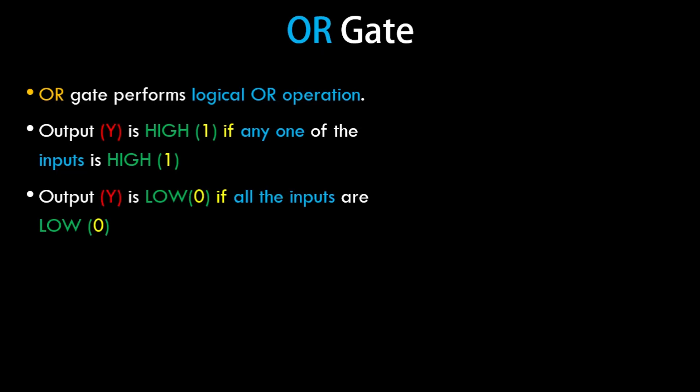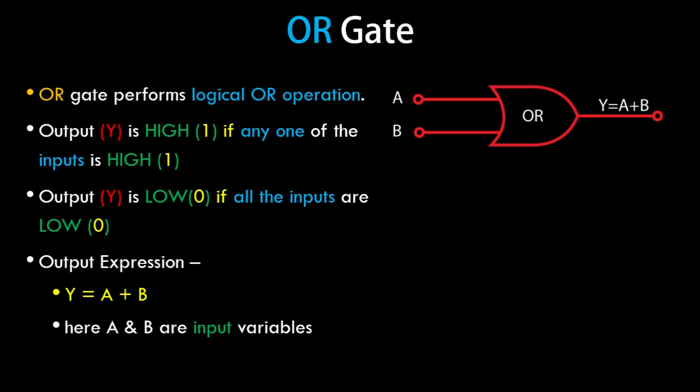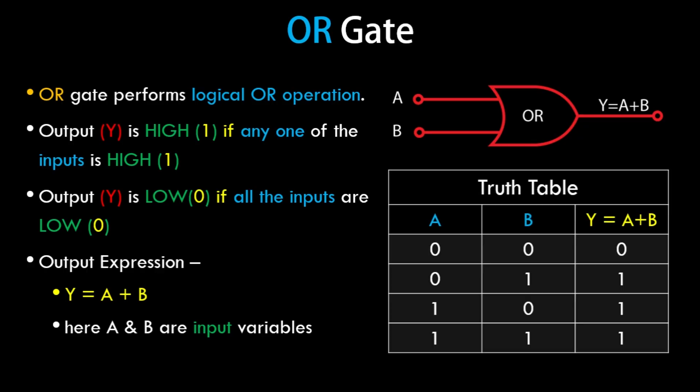The output is low if all the inputs are low. The expression is: output Y is equal to A OR B. Here is the symbol for the OR gate — A and B are the two inputs, and the output Y equals A OR B. Here's the truth table: only when both A and B are 0 is the output 0; in all other cases it is 1.